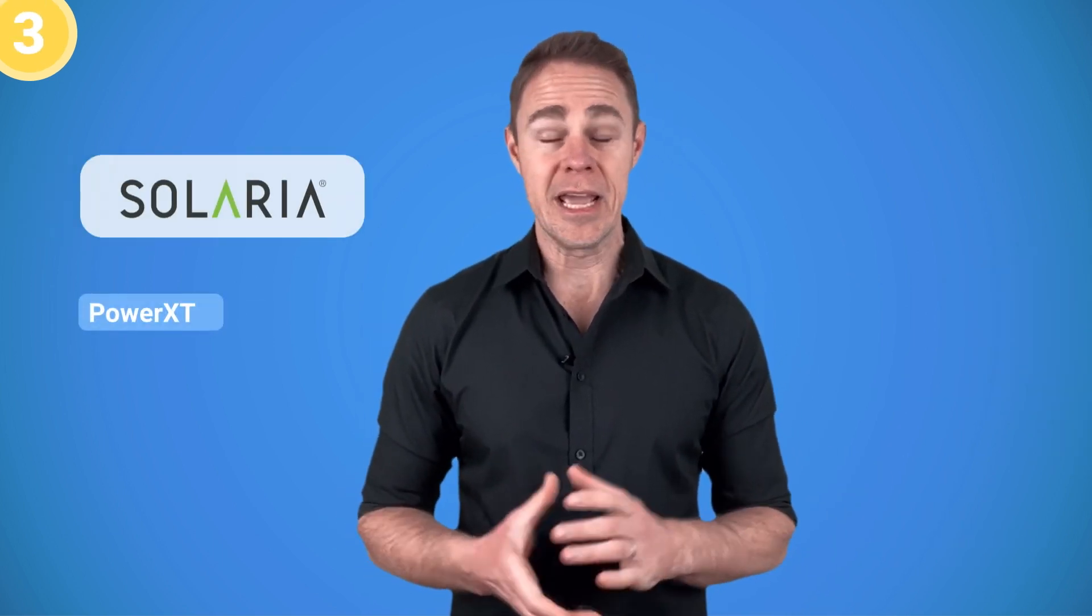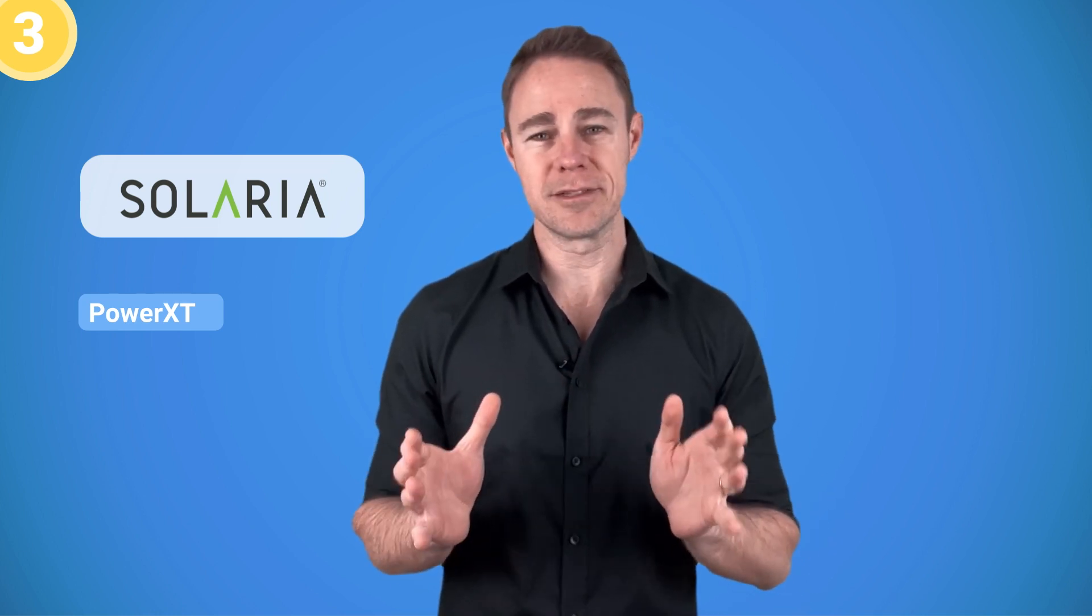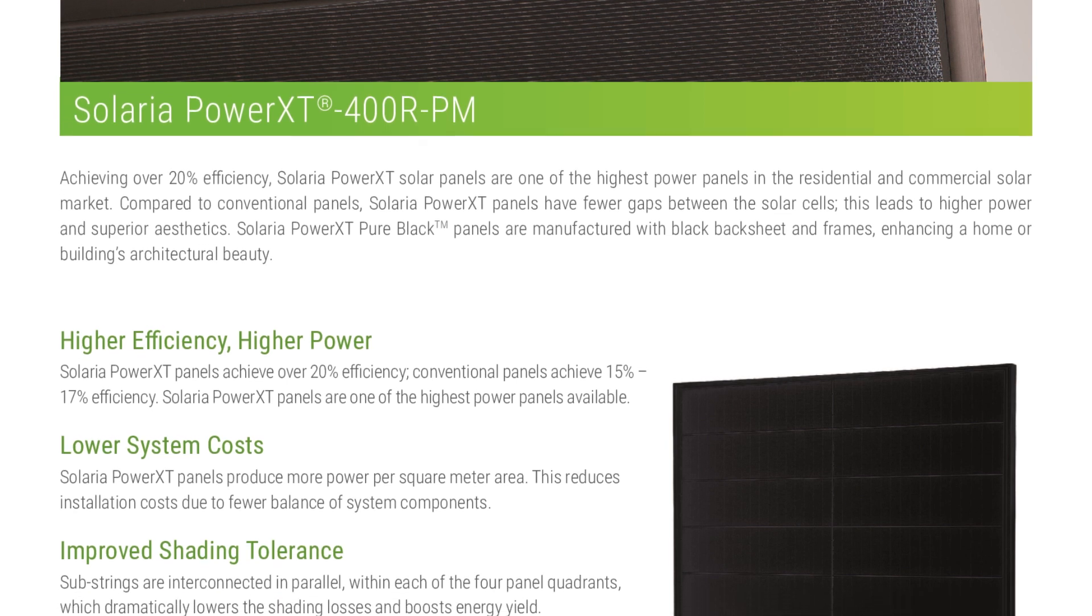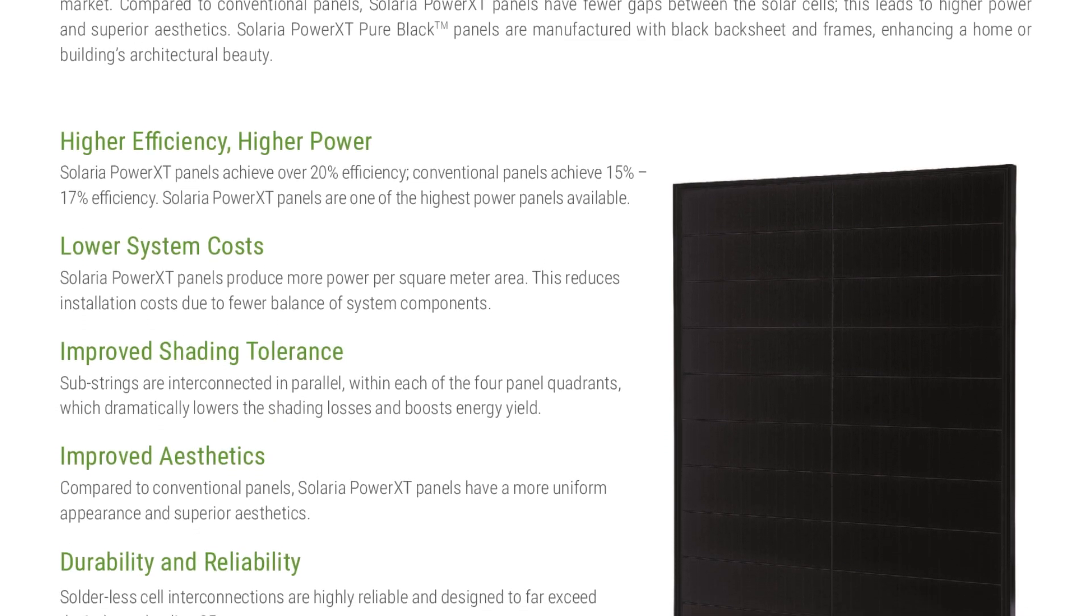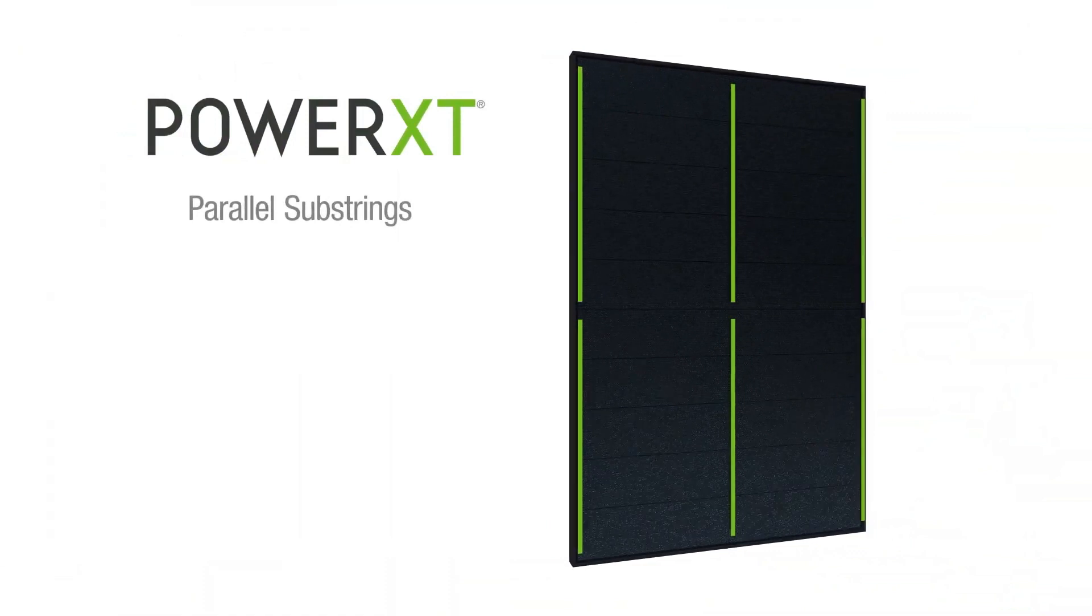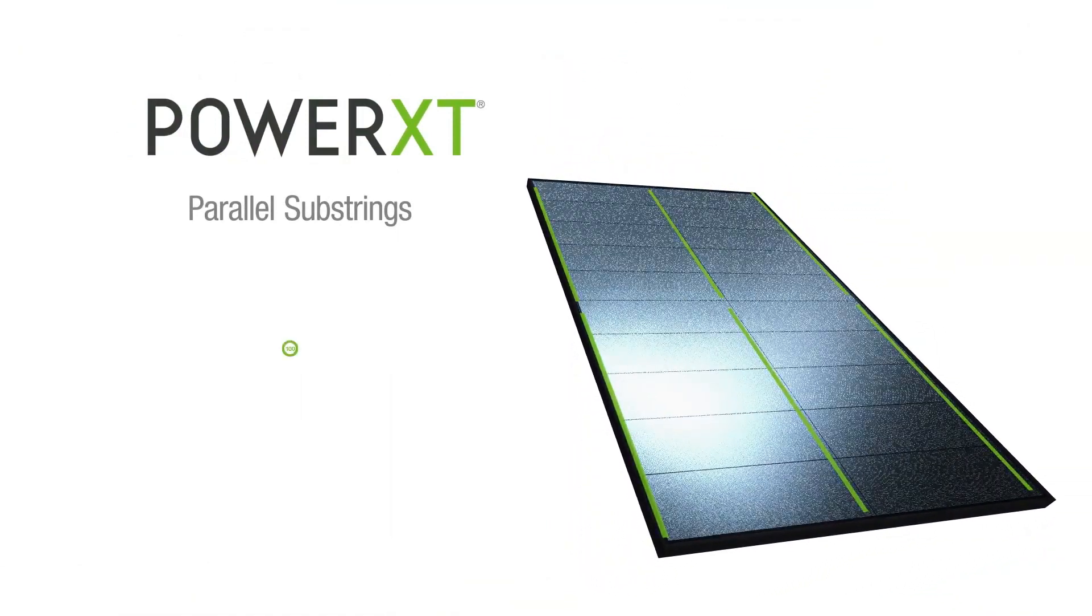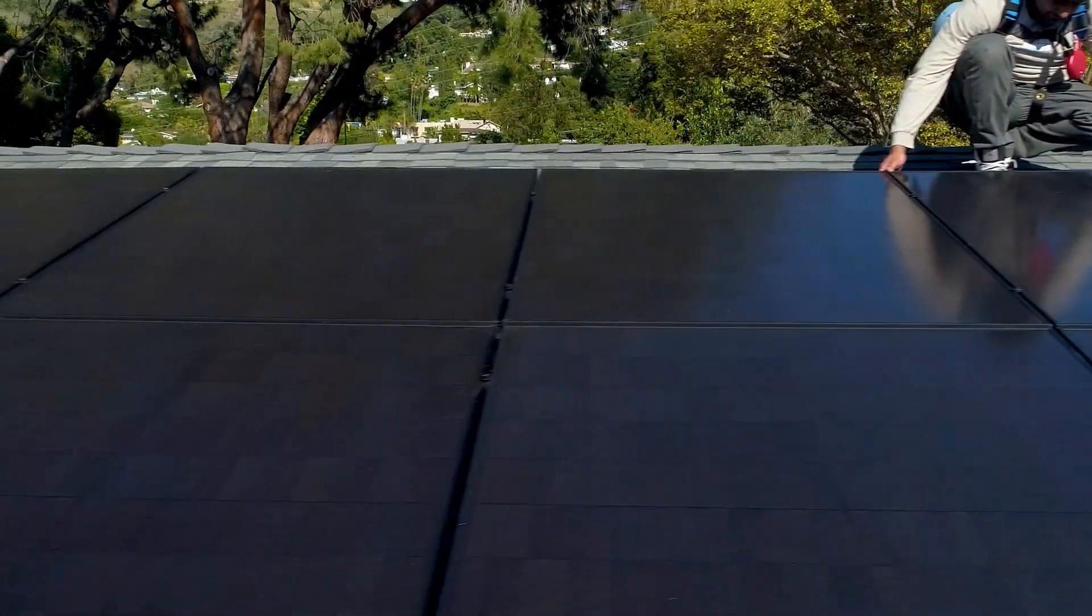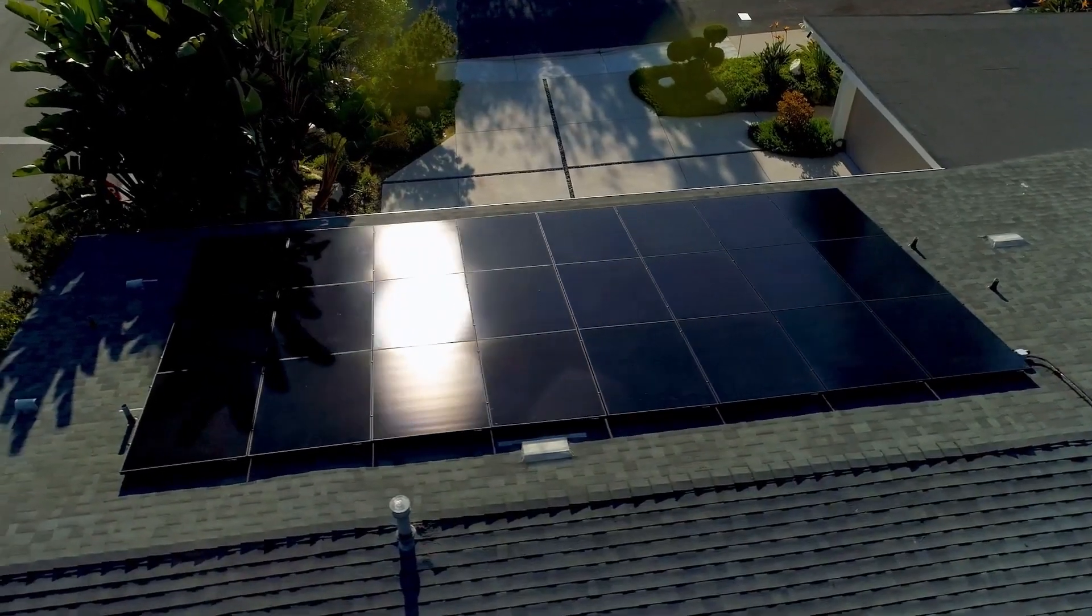Next on my list is my personal favorite, Power XT panel from Solaria. It's one of the most beautiful solar panels out there and it's very different from the others because it's not actually composed of solar cells. Instead, it's made from shingles. Shingles are independent from each other, and this makes Power XT much more resistant to shading. On average, this panel would lose about 40% less energy from shading than solar panels made of solar cells. The downside though is that they are quite expensive.